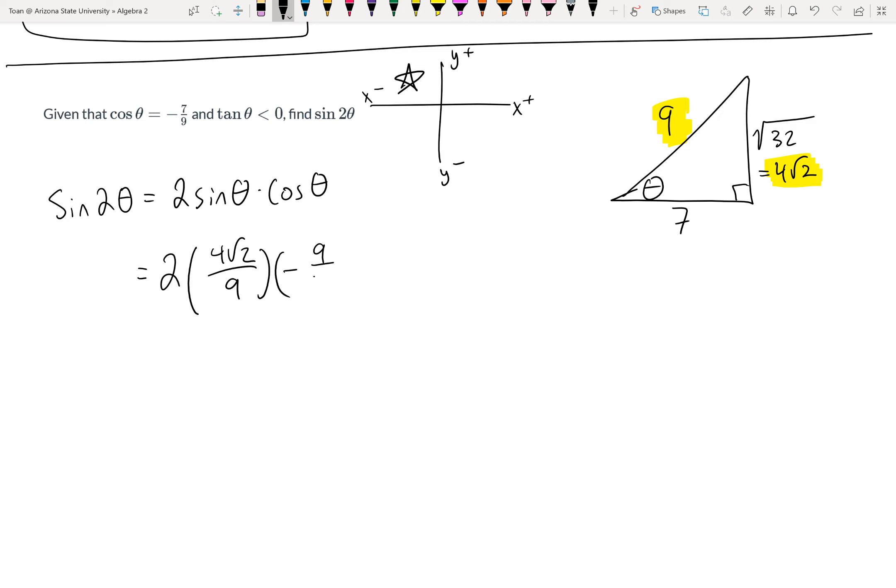So then you just do arithmetic. There's 81 in the denominator, and 8 times 7 is 56. So negative 56√2 over 81 should be the value.